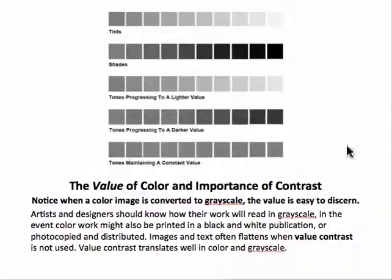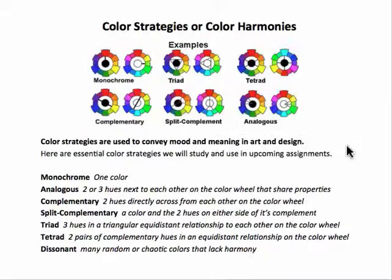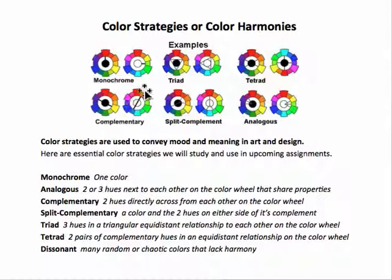Color strategies, or color harmonies, have many examples. Monochrome: you choose one color. Triad: three colors equidistant from each other on the color wheel. Tetrad: four colors equidistant from each other, essentially two sets of complements. Complements are two colors directly across from each other on the color wheel — they have interesting interactions. Split complement is when you take a color and instead of choosing the color directly opposite, you choose the two colors on either side of it. Analogous is two or three colors next to each other on the color wheel, creating a more harmonious effect.